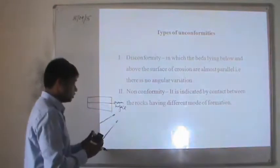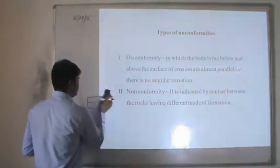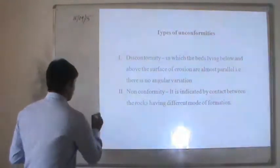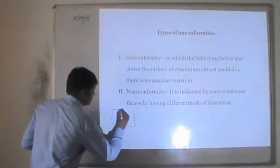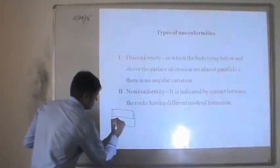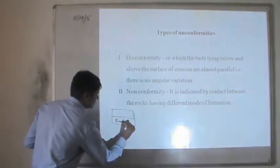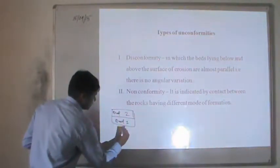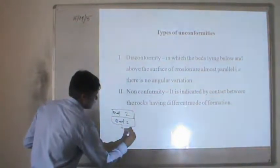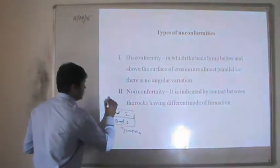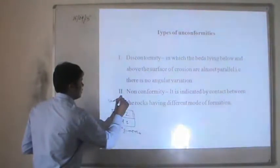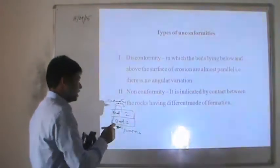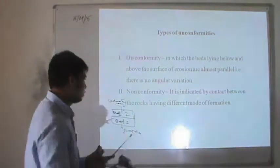The second type is nonconformity. Nonconformity deals with the contact between two different rock types. For example, if bed one is an igneous rock and bed two is a sedimentary rock, then this kind of unconformity is known as nonconformity.